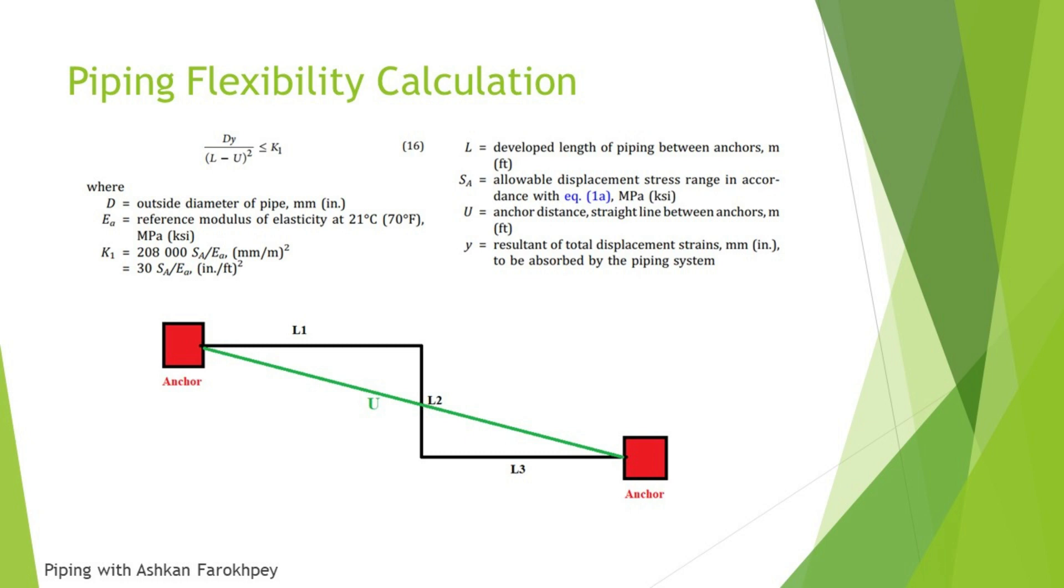In the next page you can see I have drawn a shape with two anchor points in red at the two sides of the shape and a piping system which is drawn in black. L1, L2, and L3 is the developed length of the piping system and U, which is the direct or straight line between the two anchors. Whenever you have a system or a piping system like this, you can use this formula for calculating the flexibility of your system.